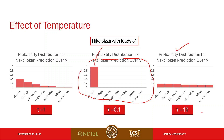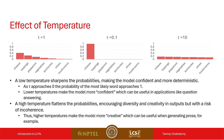Temperature tau is a very important hyperparameter. If you want to be creative, tau should be higher; if you want to be deterministic, tau should be lower. Tau equals 1 gives the regular softmax probability. That concludes the topic of decoding strategies. In the next lecture we will move to the next part. Thank you.